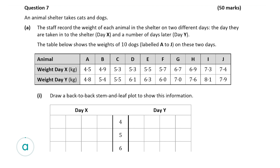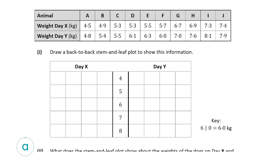The template for the stem and leaf plot has already been given to us in the question, and the numbers down the middle, which is known as the stem, have already been written in. Now it's up to us to fill in the leaves, which are the numbers either side of the stem, going here and here.